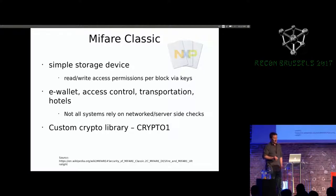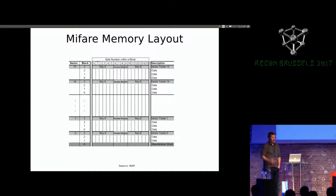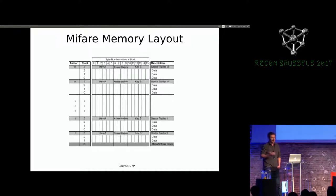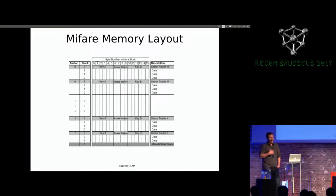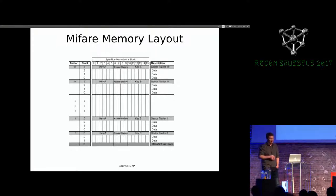The Mifare Classic uses a custom crypto library called CryptoOne, and the core of that has been broken for quite some time. The memory layout of a 1K card has 16 sectors with four blocks each, and a Key A and Key B depending on whether you want to read or write data for each block. For a typical card, there's default information the manufacturer wants you to be able to read, and then there may be encrypted data like check-in and check-out times at a hotel.